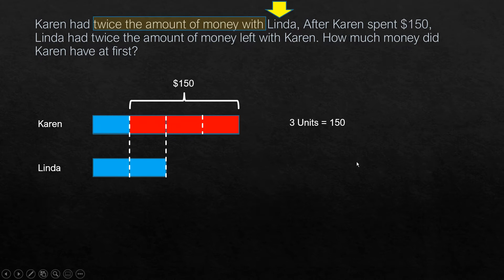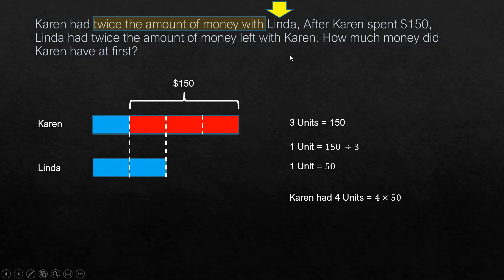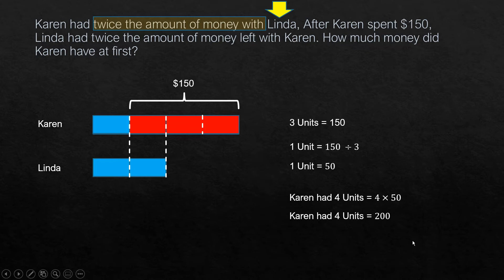So we can see that 3 units is equal to $150, and one unit is 150 divided by 3, which is $50. The question asks how much money Karen had at first — Karen had 1, 2, 3, 4 units in total, so Karen had 4 units, which is 4 times $50, equal to $200.